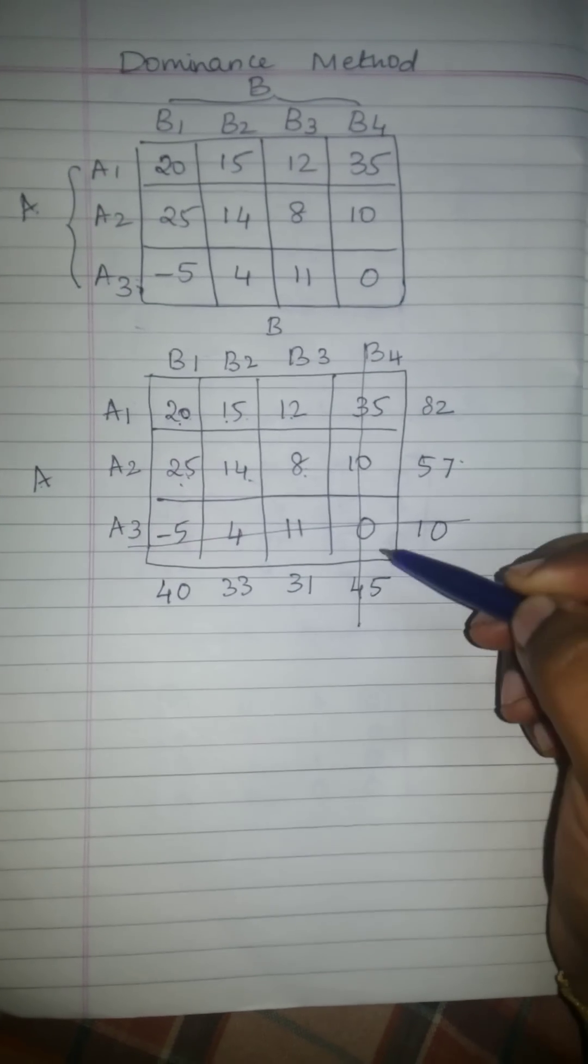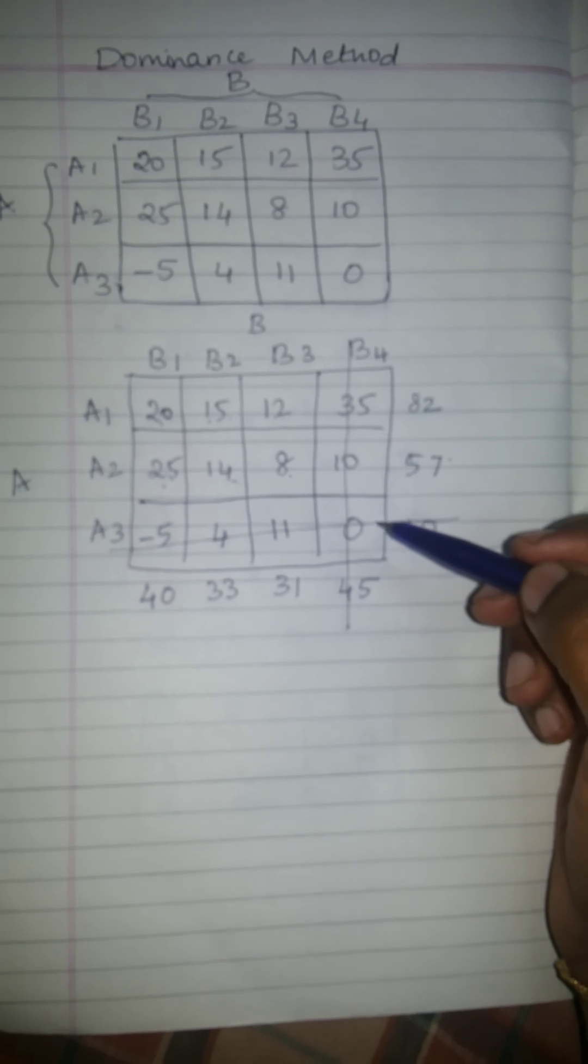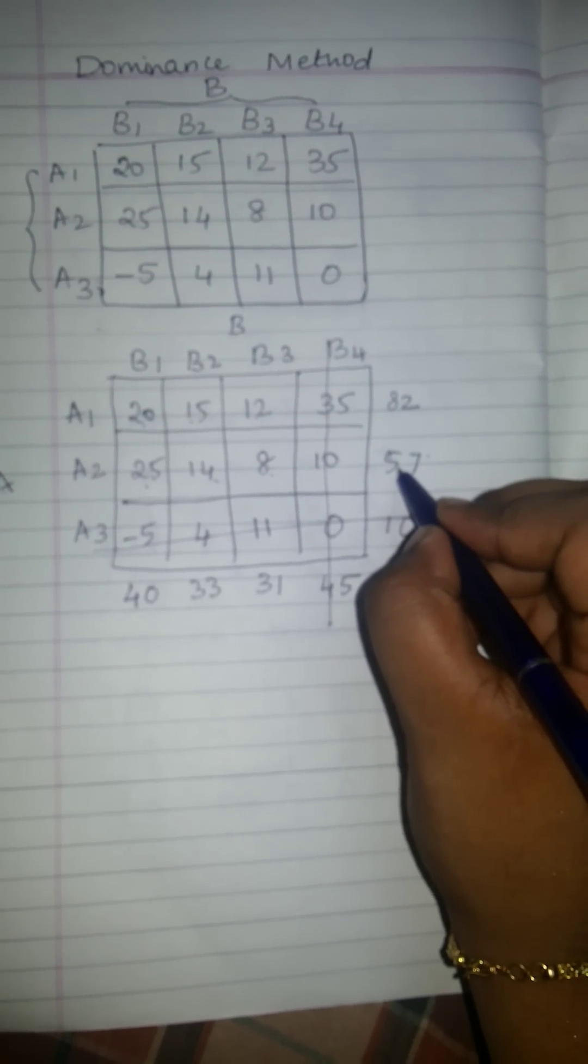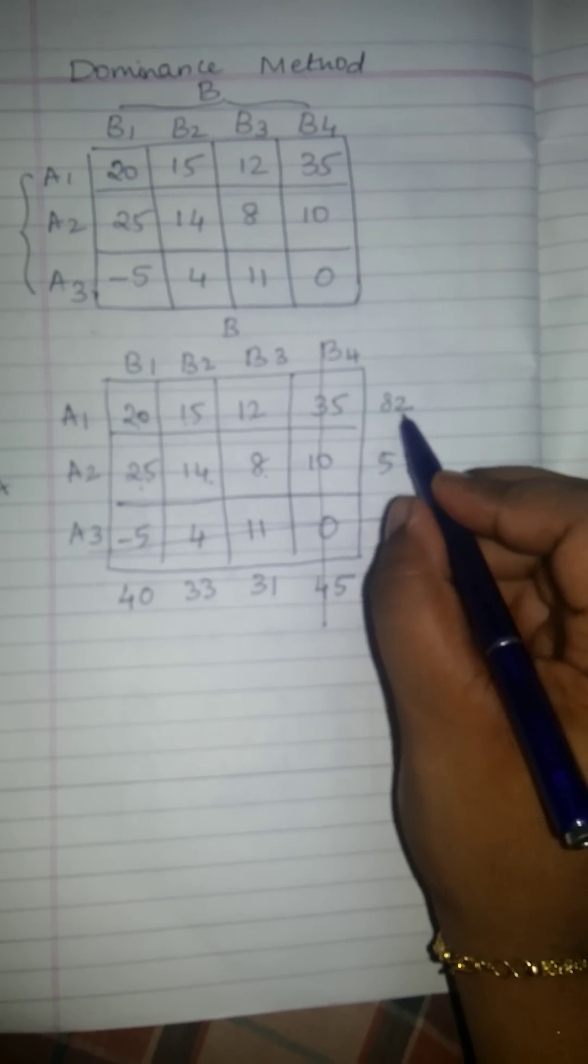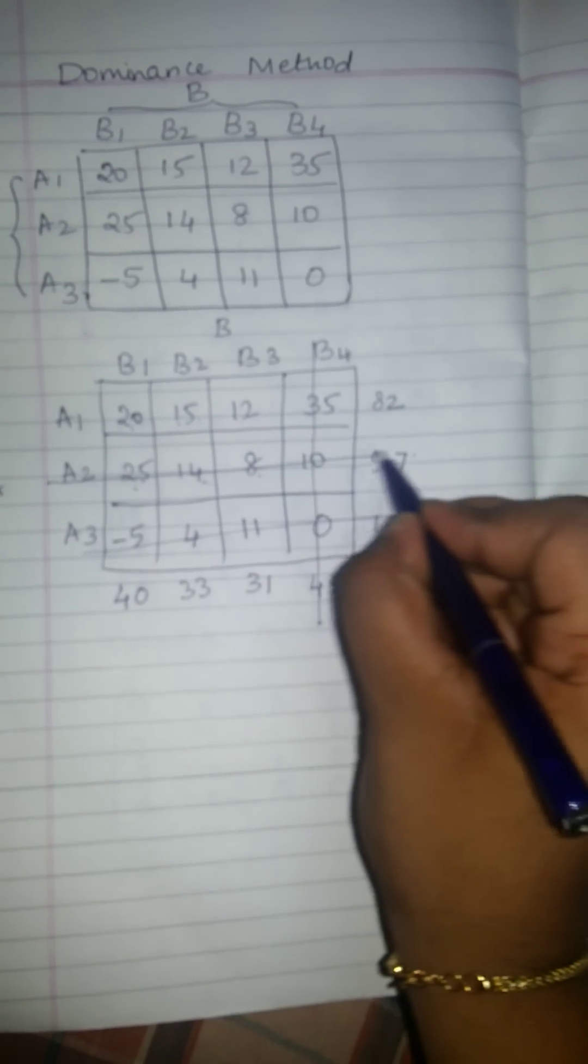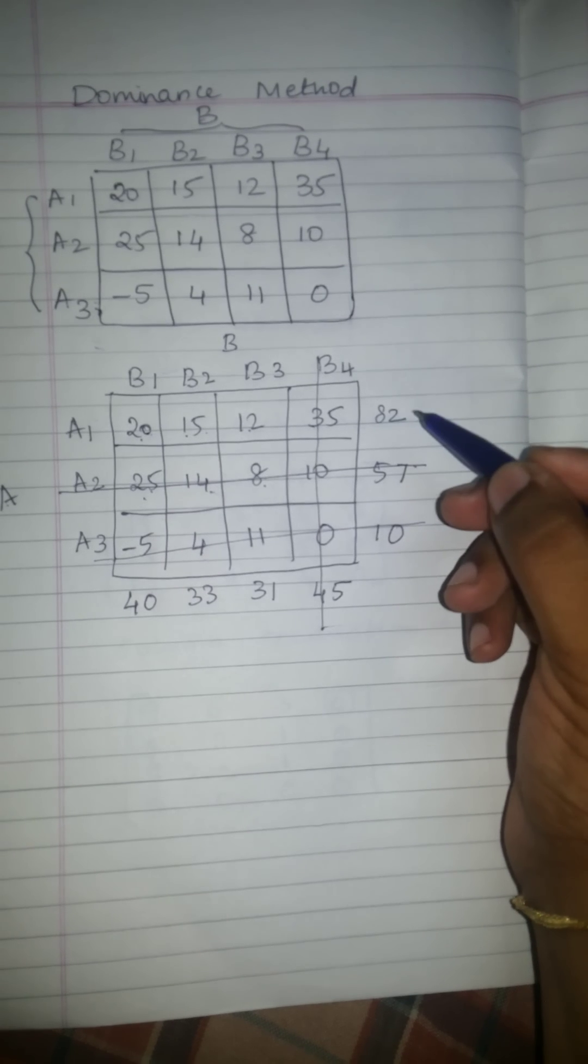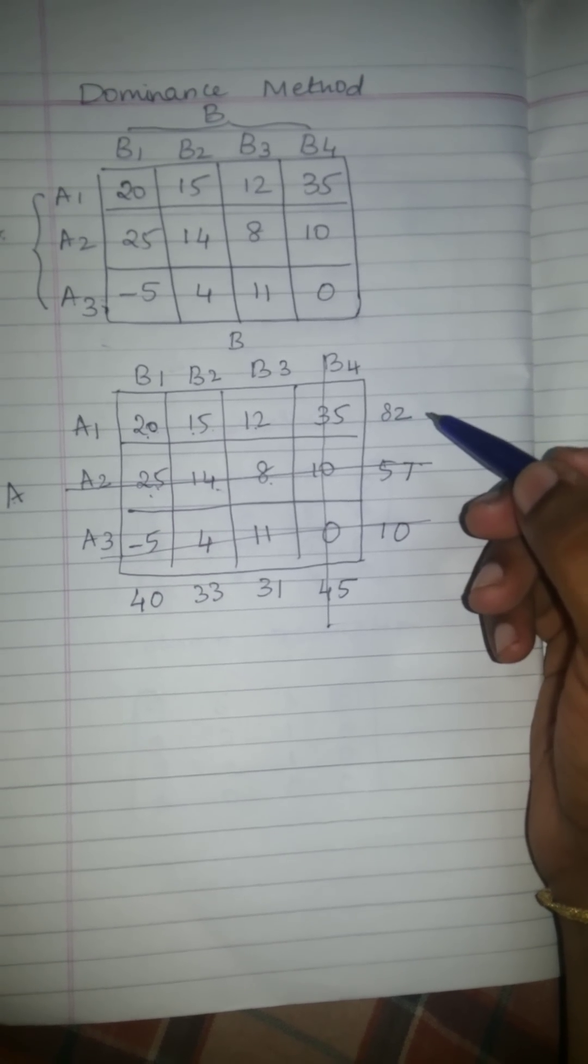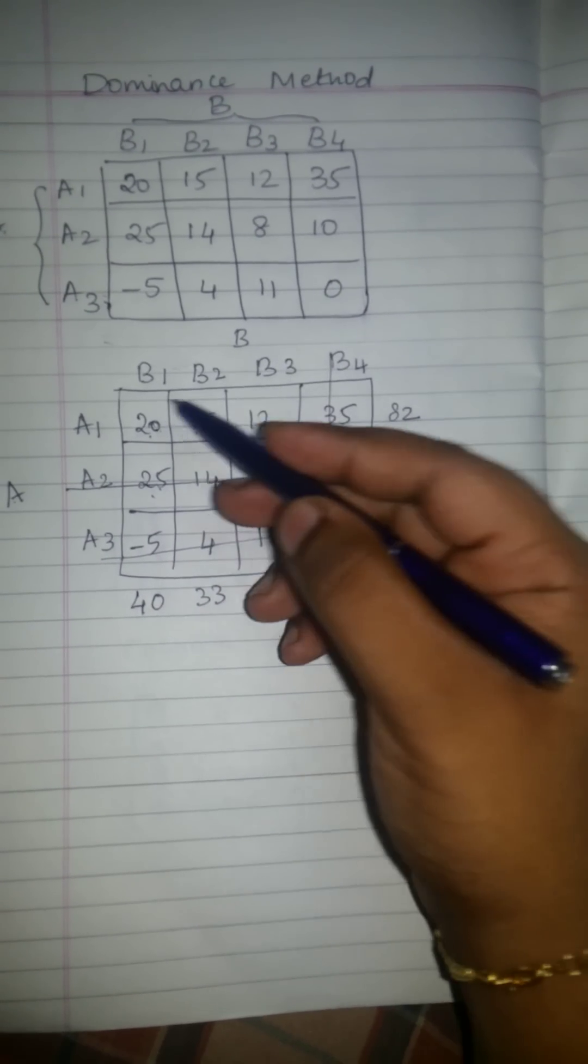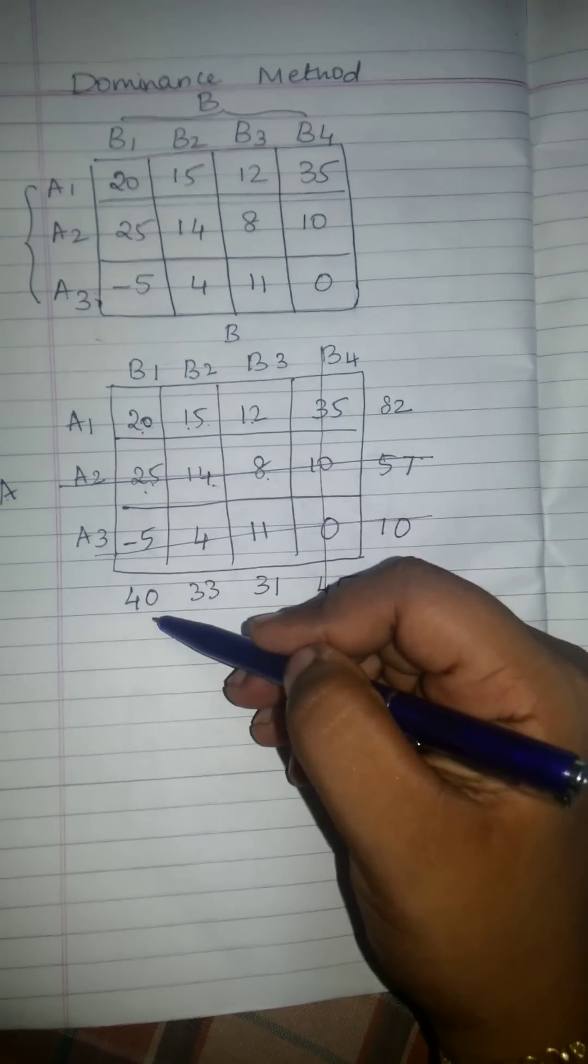Now it is A's turn again. Next, A will try to cancel this particular row, has to retain the maximum value. Now it is B's turn and B will now cancel the largest value, largest column. That is, here 40.